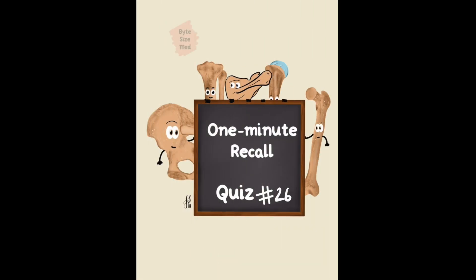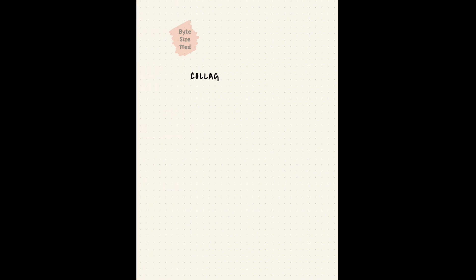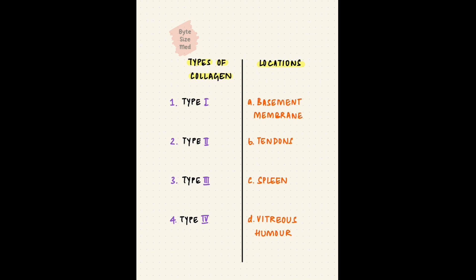There are lots of different types of collagen distributed throughout the body. We'll be matching the different types of collagen with the areas where they're found. There are over 28 different types of collagen but these four are the most important. Type 1, 2, 3 and 4. That's our column on the left. On the right let's put down some examples. The basement membrane, tendons, the vitreous humor of the eye and the spleen. Now you have to match the type of collagen with its location. You can press pause on this video here and take as much time as you need to sort them out. But I just get one minute, so time's up.